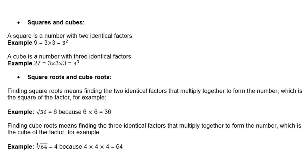Squares and cubes. A square is a number with two identical factors. For example, 9 is 3 times 3, which is 3 squared. A cube is a number with three identical factors. For example, 27 is 3 times 3 times 3, which is 3 cubed.